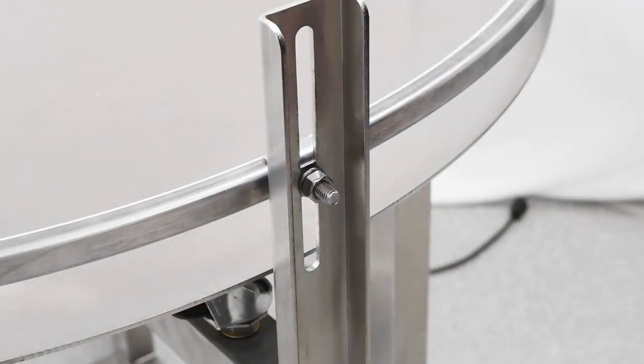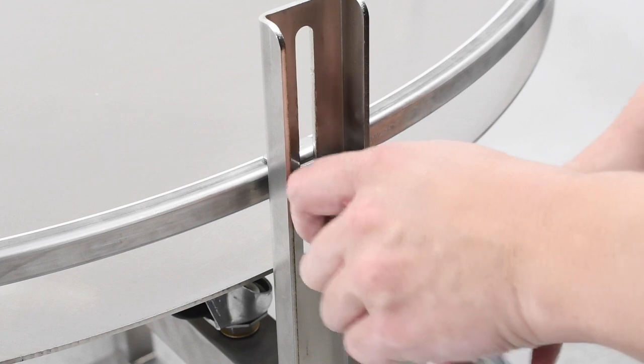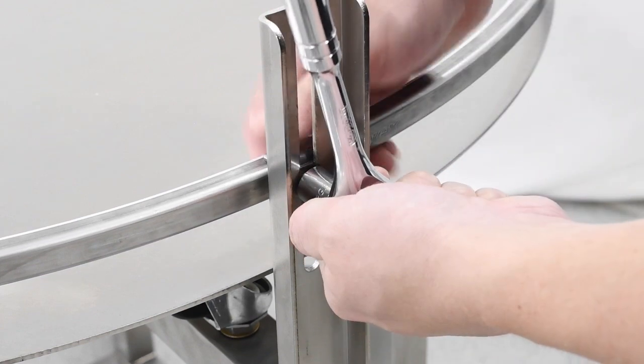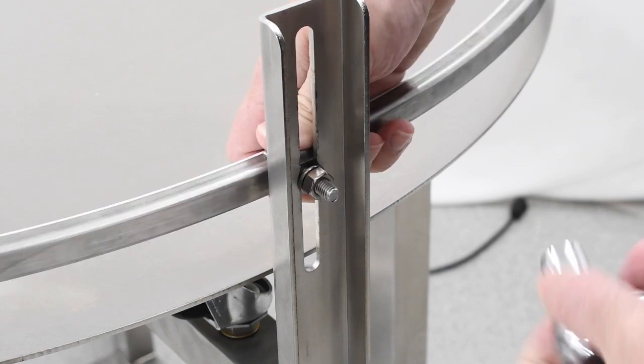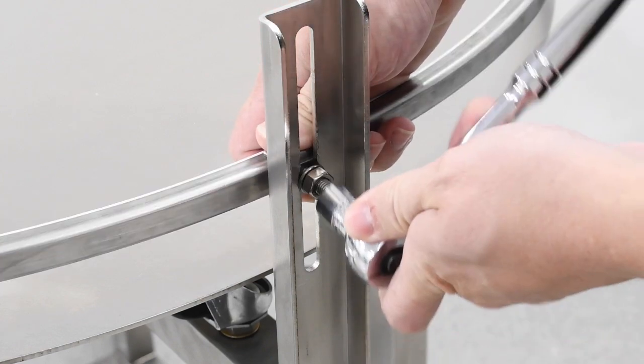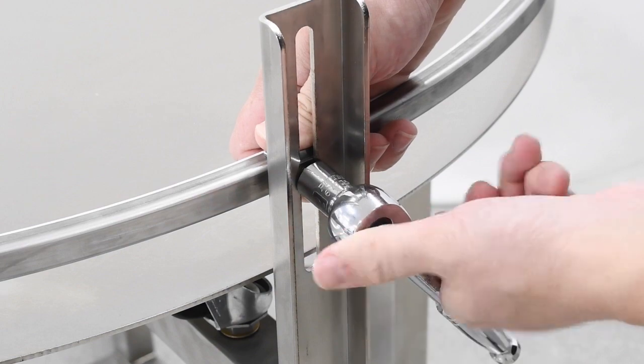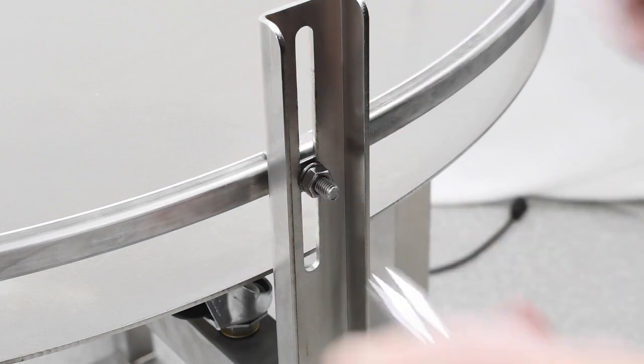To adjust the height of the accumulation guide rail, loosen but do not remove the jam nut on the back of the mounting posts using a half-inch socket. Once loose, the guide rail clamp can move up or down accordingly. Tighten the jam nut using the half-inch socket once the guide rail has been adjusted.